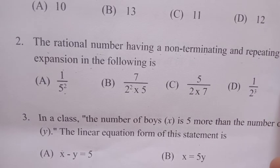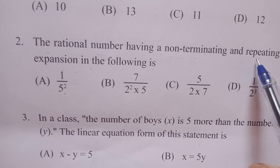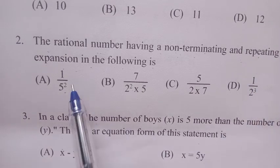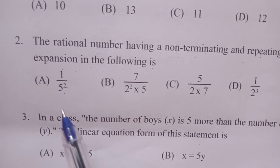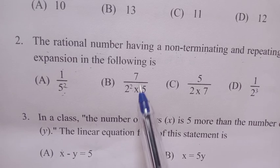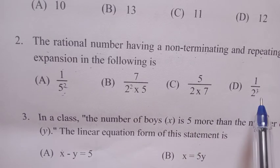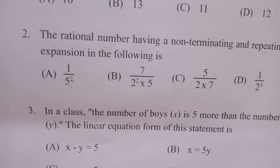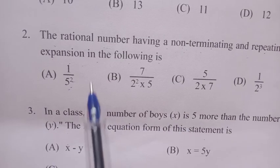But there's one condition: repeating decimal. The quotient has the same digits repeating again. 1, 2, 3, 4... Option A is 1 upon 5 squared. This is a rational number. This condition should be satisfied.